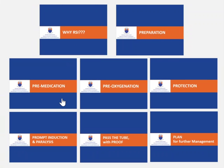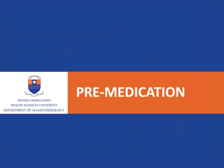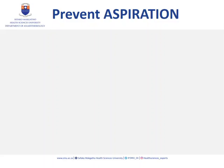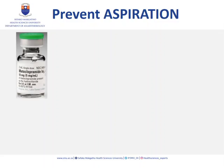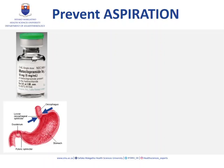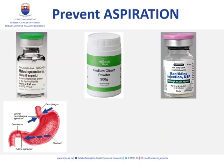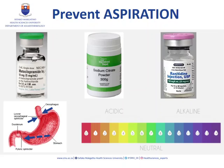Now we come to pre-medication. We want to further prevent aspiration or reduce its effects if it does happen. The first thing we can give is metoclopramide — a pro-kinetic that also increases the tone of the lower esophageal sphincter, reducing the chance of regurgitation, and helps empty the stomach. We can also use sodium citrate dissolved in water, and an H2 blocker like ranitidine. These two agents work to increase the pH of the stomach contents, so that if aspiration does occur, it is less harmful to the lungs.